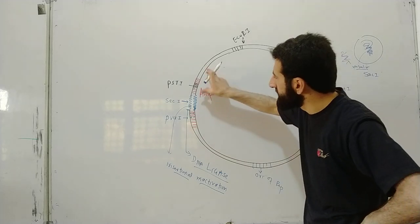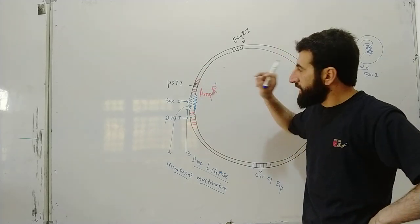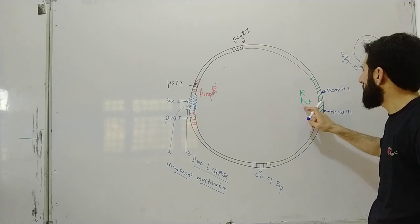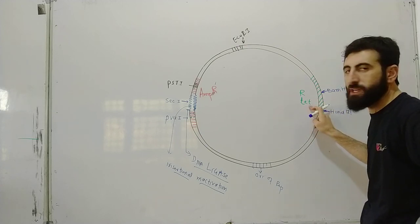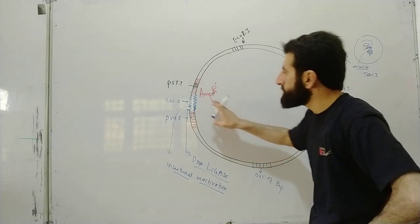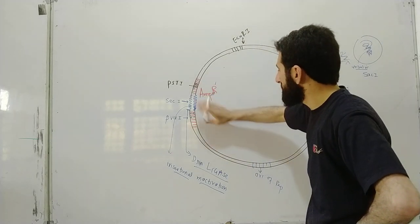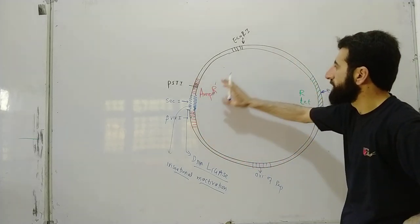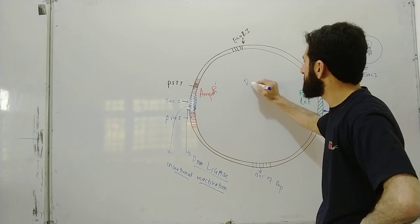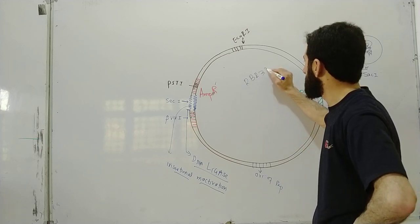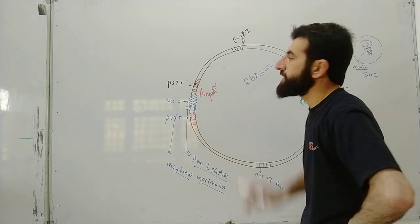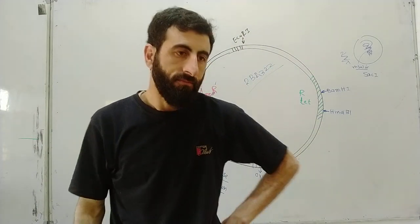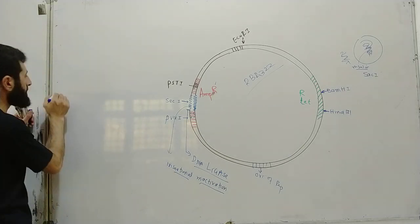When we insert the desired DNA — for example, the human insulin gene — into the tetracycline resistance gene of PBR322, the tetracycline resistance gene becomes inactive. The recombinant plasmid PBR322 with the human gene is then introduced into the bacteria. The bacteria with the recombinant DNA will be identified using the selectable markers.